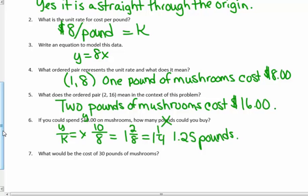What would be the cost of 30 pounds? Well, that's X. What's the cost? That's the Y. How do I figure Y? I do Y equals my K times my X. My K is 8. My X is 30. It's going to cost $240 for this mushroom mix if you buy 30 pounds of it. For 30 pounds of it, 30 pounds at $8 a pound, it would cost $240.